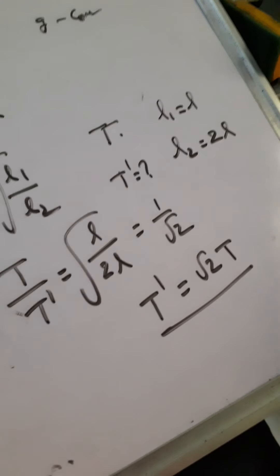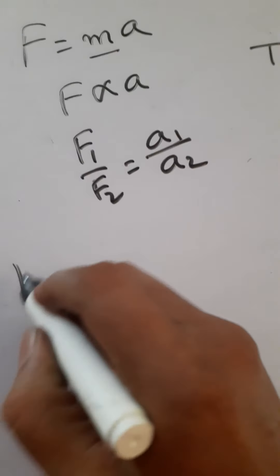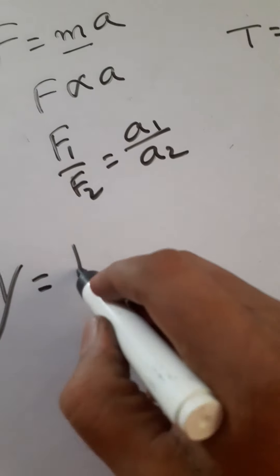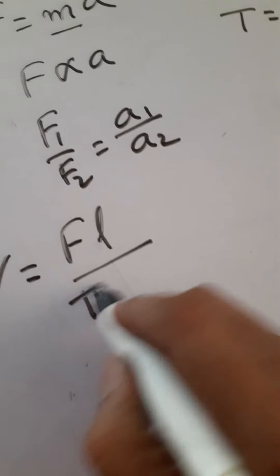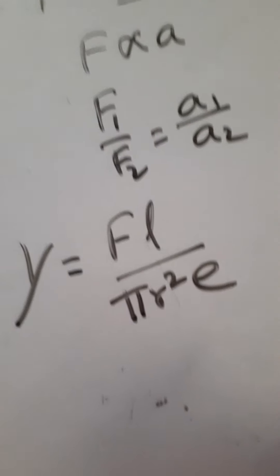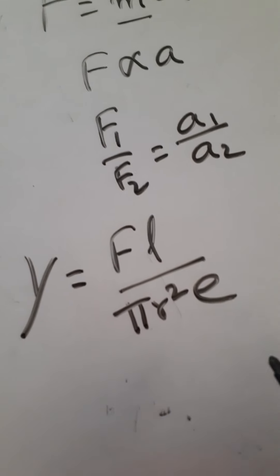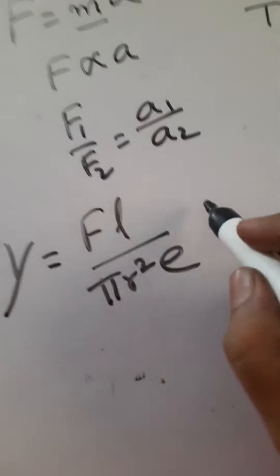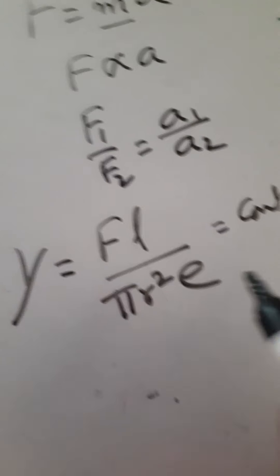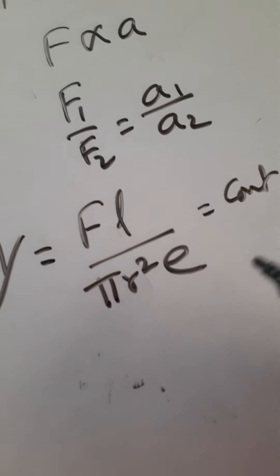In many concepts, we can get this type of formulas. For example, Young's modulus: F L by pi R square E. Generally, Young's modulus depends on nature of material. So it is a constant. Or they said two wires made of same material, means Y constant.